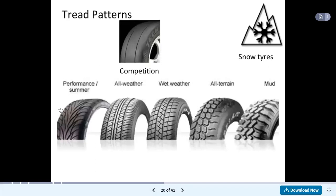Looking at tread patterns: we have seen different diagrams related to tread patterns. There is performance summer, then all-weather conditions. If the environment is wet, a specific type of tread pattern is used. For all-terrain conditions, another structure is used. In mud conditions, the gap between treads becomes larger. These are the different tread patterns.